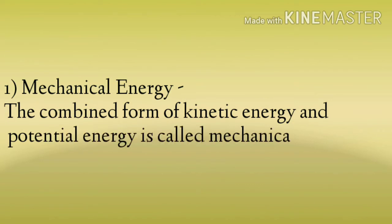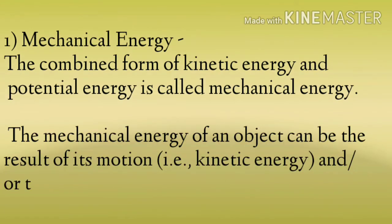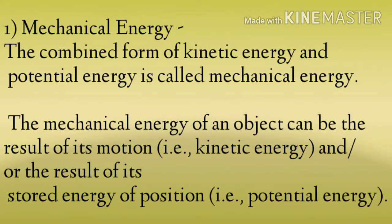The combined form of kinetic energy and potential energy is called mechanical energy. Mechanical energy दो energy से मिलकर बनती है — kinetic energy और potential energy से. The mechanical energy of an object can be the result of its motion — कोई भी object है, उसमें जब motion होगा, that is kinetic energy. And it can be the result of its stored energy of position — उसमें जो energy पहले से stored है, वो potential energy होगी. जब kinetic energy और potential energy दोनों एक साथ किसी object पर apply होती हैं, तब हम कहते हैं कि उस पर mechanical energy apply हो रही है.